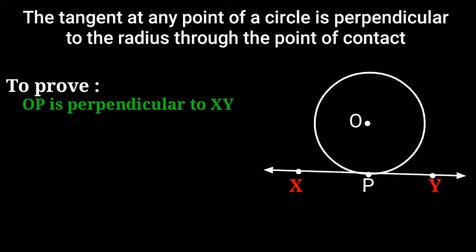We will suppose OP is not perpendicular to XY. Take a point Q on XY other than P and join OQ. The point Q must lie outside the circle.